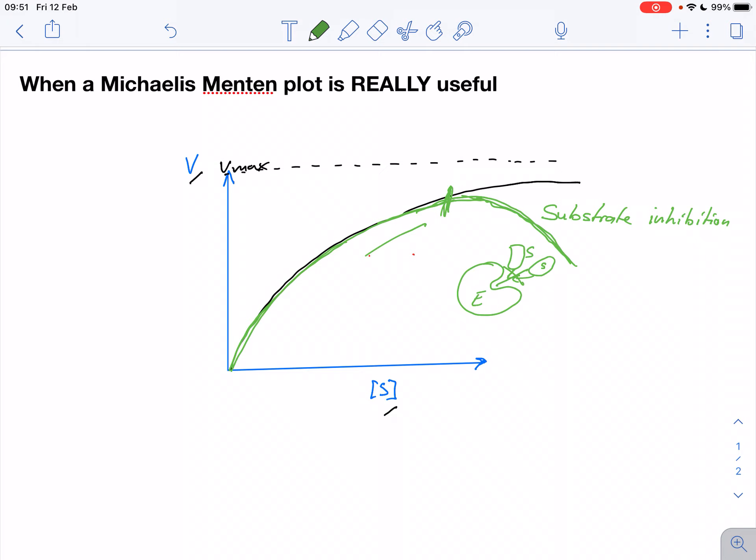So these are two cases where Michaelis-Menten plot is really useful. It shows us substrate inhibition, and it also shows us if the enzyme deviates when it has this cooperativity, when the enzyme subunits talk to each other in a way and react to whether a substrate has bound. So I hope this makes sense and you found this useful, and thank you very much for watching.